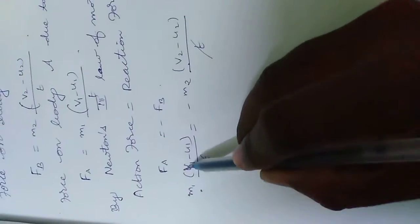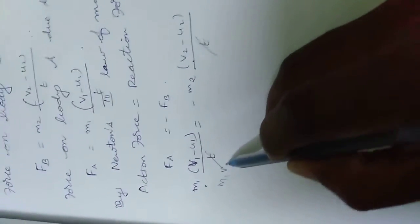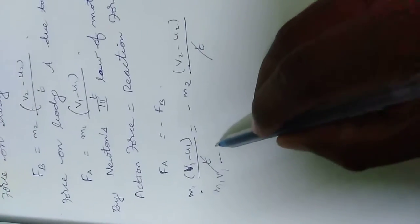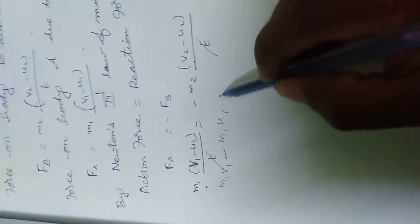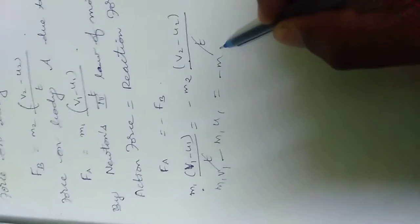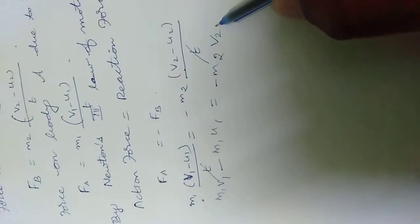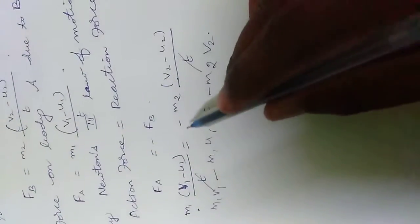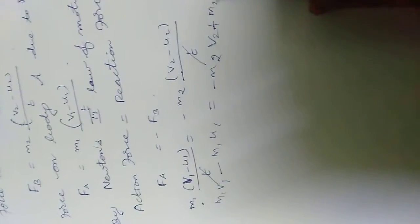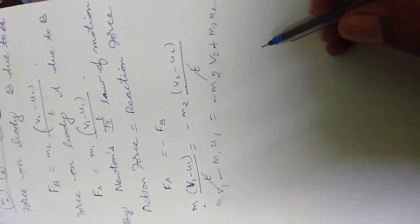Multiply this one. M1 into V1, M1V1 minus M1 into U1, M1U1 is equal to minus M2V2, minus into minus gives plus M2 into U2.